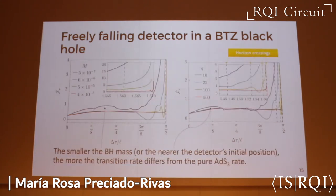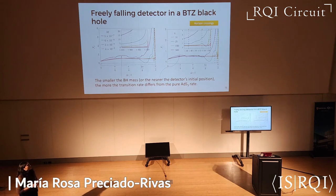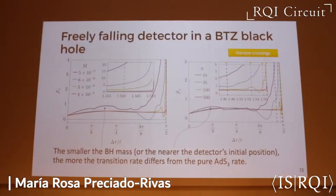Because BTZ is a fairly easy spacetime to work with, we were able to explore a wide range of masses and detector initial positions. We can see that for smaller black hole mass or for a nearer detector initial position, the transition rate for the black hole differs more from the pure ADS-3 rate.